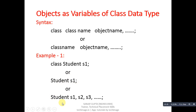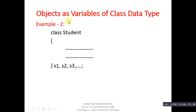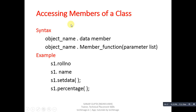Another example: after the closing curly brace of the class, you can declare variables directly — that is the purpose of the semicolon as termination. To access members of a class, the syntax is: object name, then dot, then data member. To access member functions: object name, then dot, then the member function and its parameter list. Examples: s1.rollNumber, s1.name, s1.setData, and s1.percentage — the first two access data members and the last two access member functions.